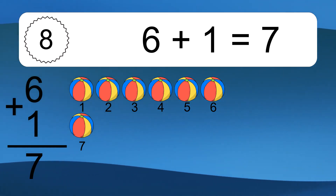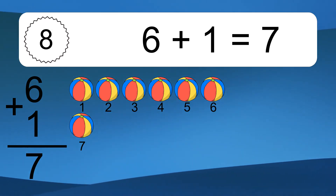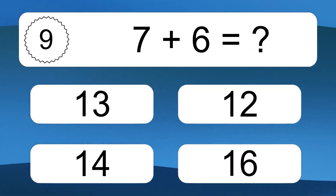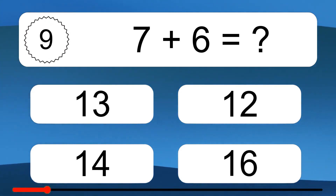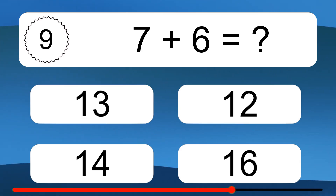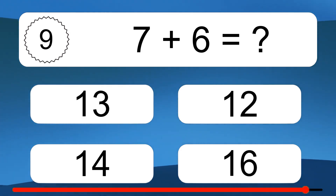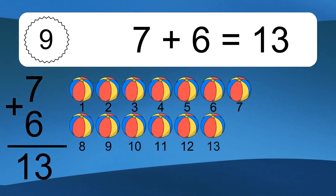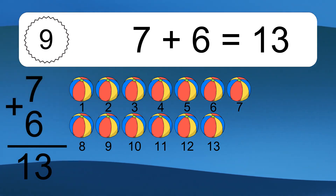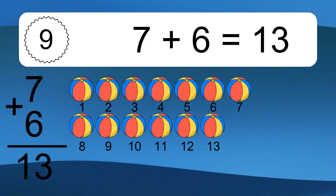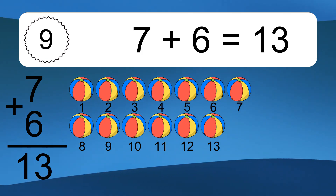Let's count it: 1, 2, 3, 4, 5, 6, 7, 8, 9, 10, 11, 12, 13, 14, 15. Let's count it: 1, 2, 3, 4, 5, 6, 7, 8, 9, 10, 11, 12, 15.